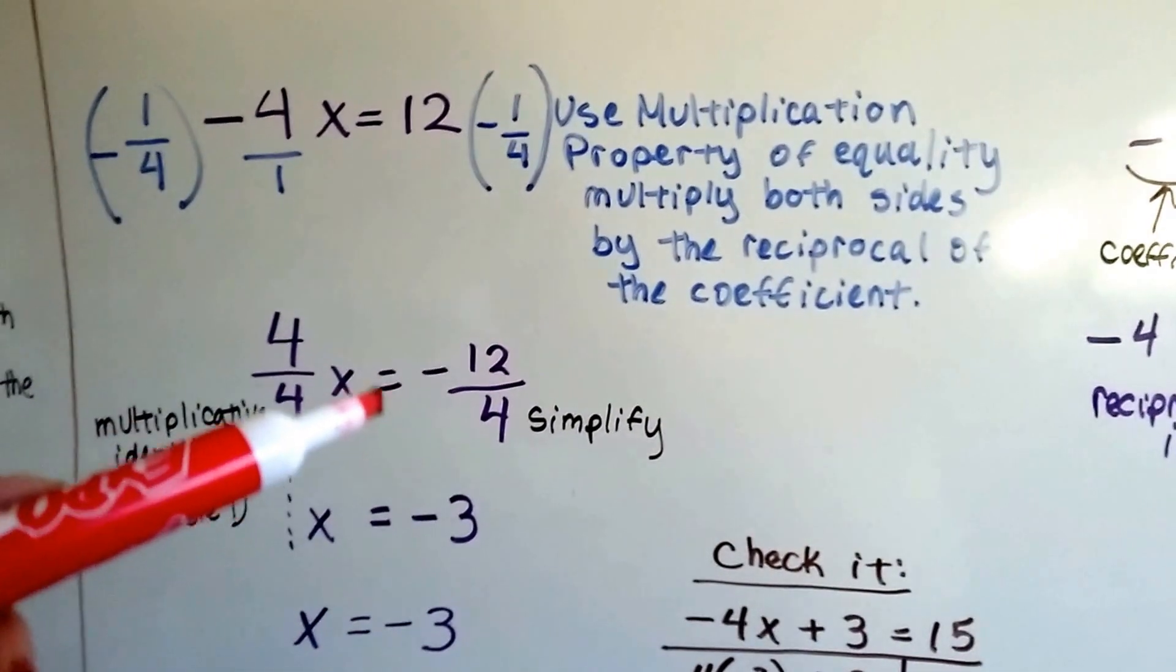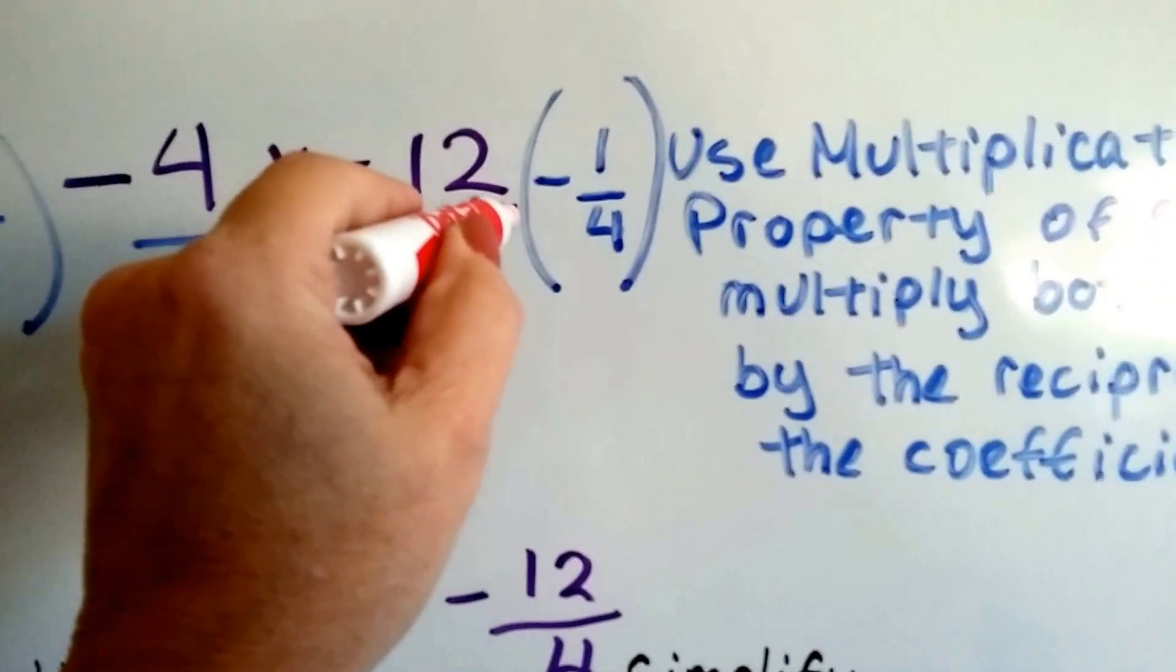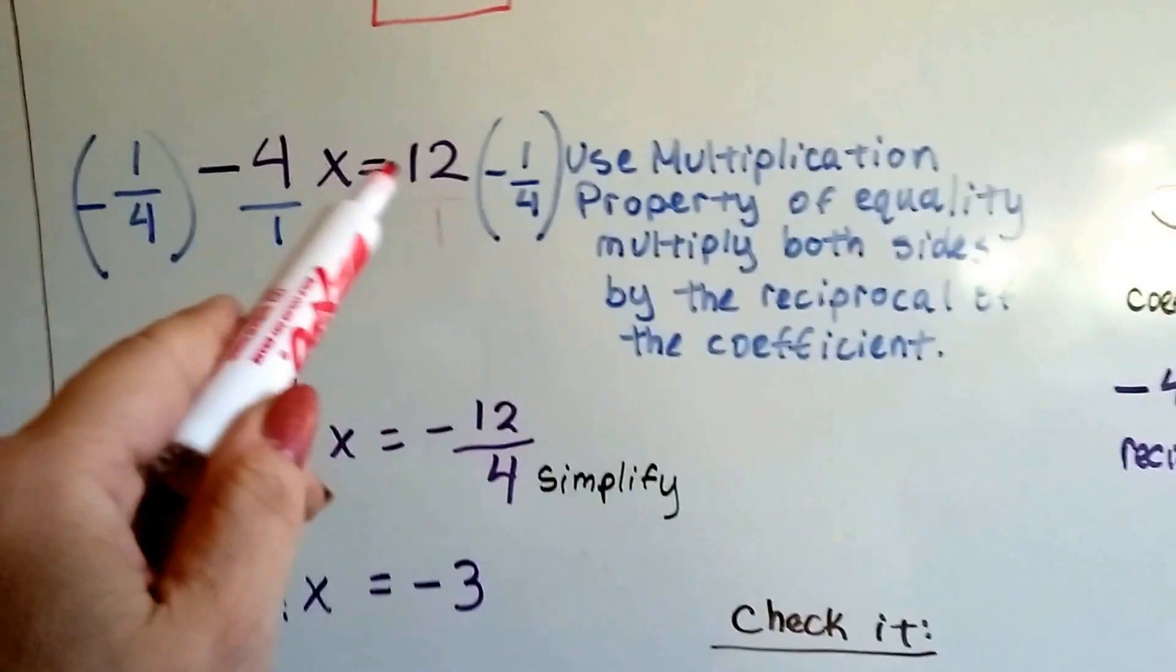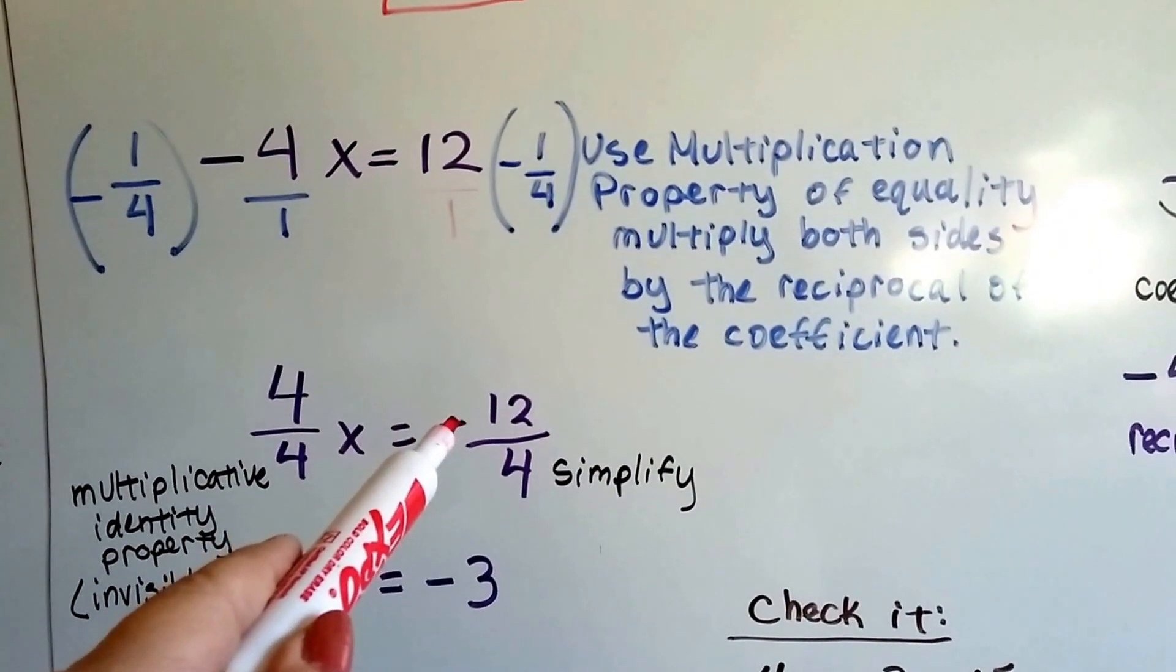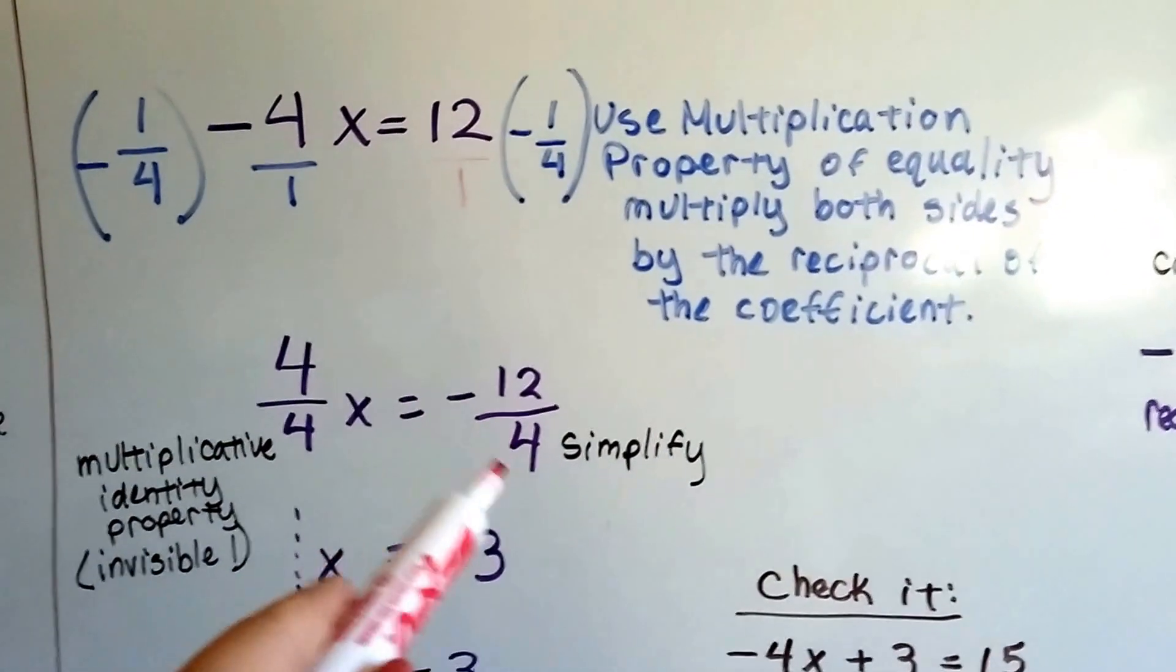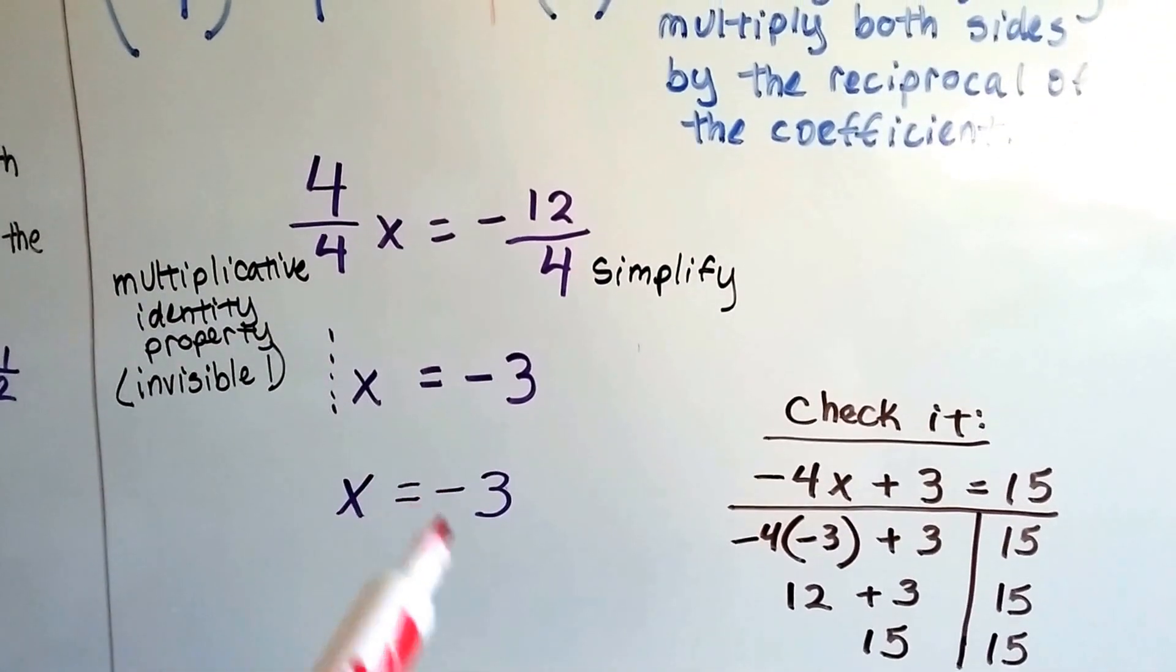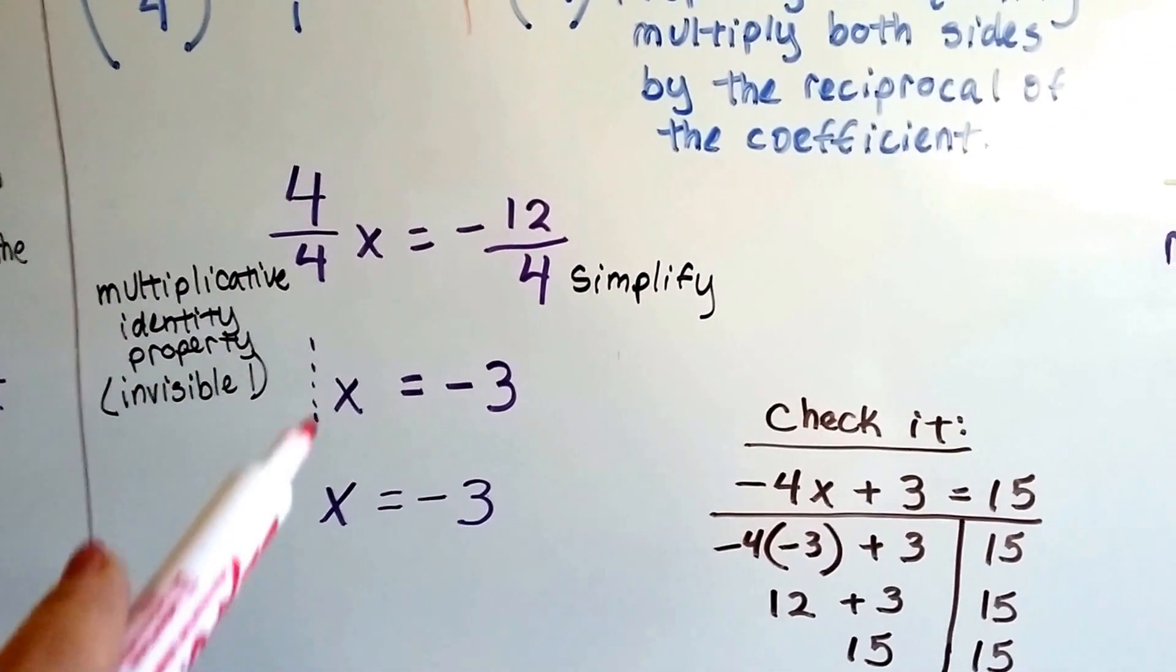That's that multiplicative identity property, our friend the invisible 1. And on this side, we can put a little 1 here. 12 times a negative 1 is a negative 12 over 4. When we simplify this, we get a negative 3. So now we get x equals negative 3. We didn't need to write that one.